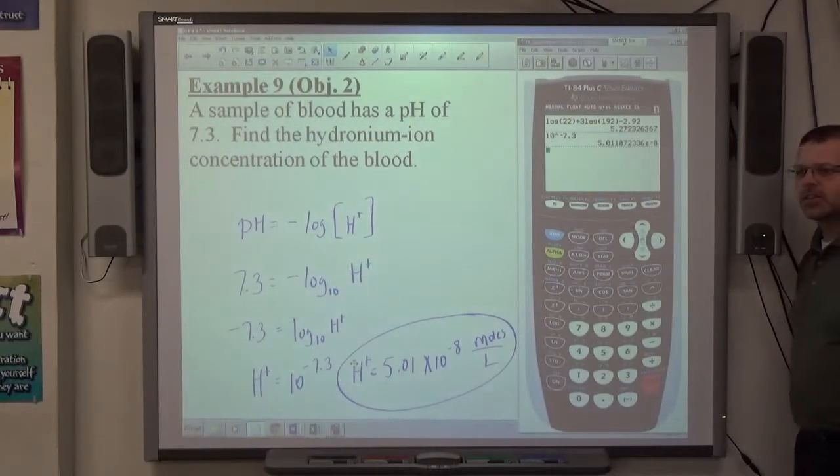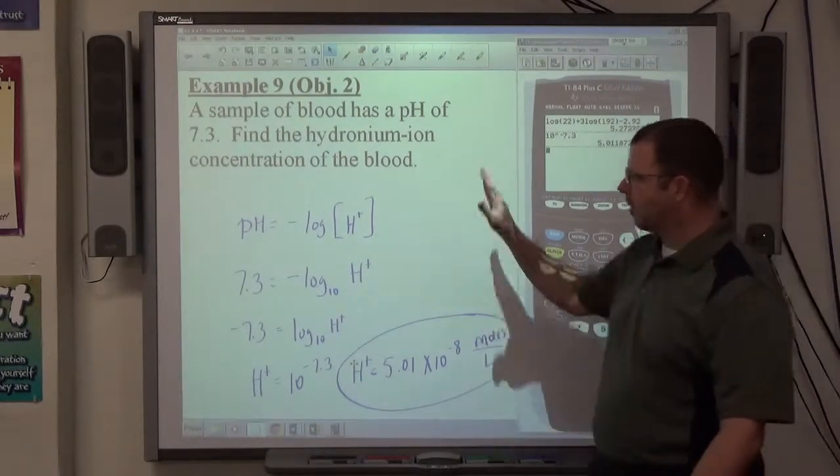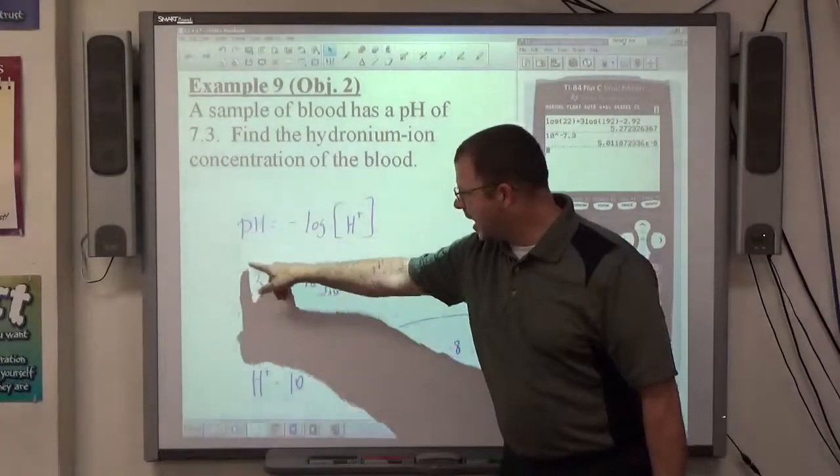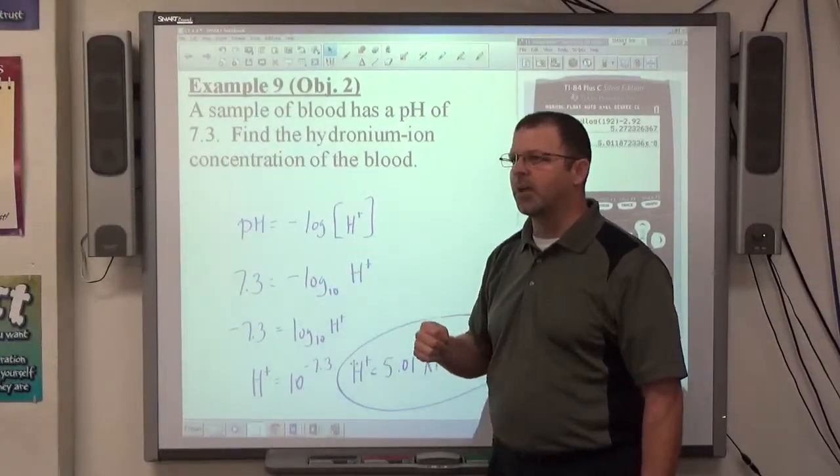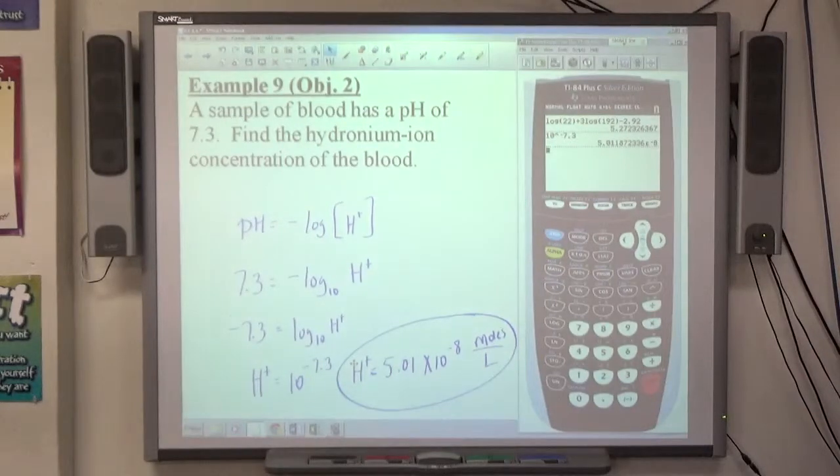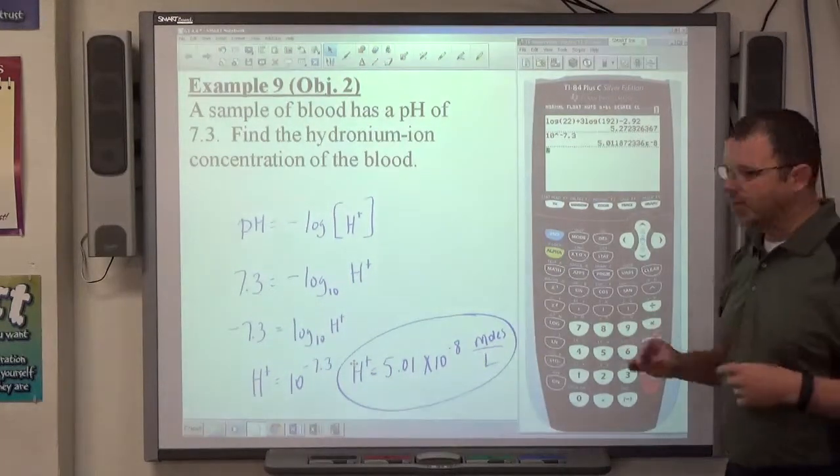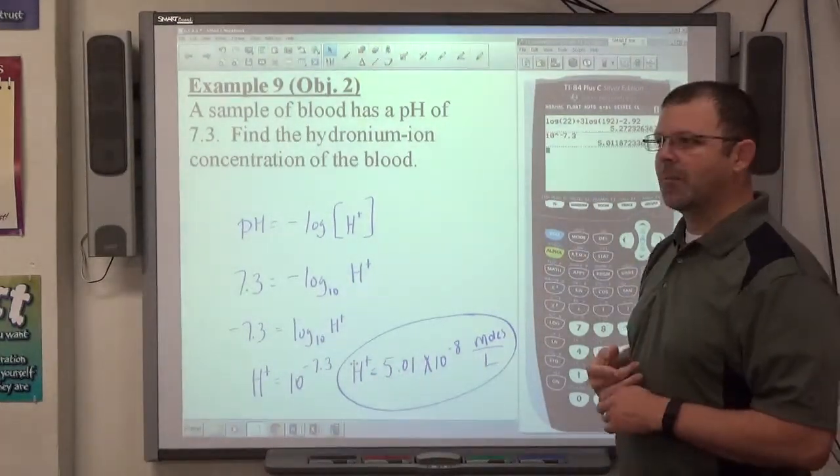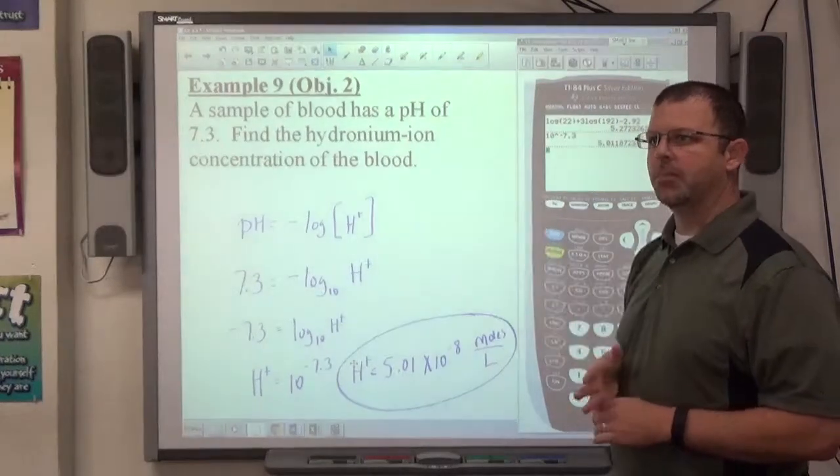So make sure you give me that correct unit on hydronium ion anytime you're asked for it. And that's basically all it is. So you have the logarithm formula, or I should say the pH formula here. They gave me pH, you've got to solve for H+. The other way they do it, which we'll see in the other examples, is they're going to give you H+, and ask for pH. In this case, 7.3, that makes it a base. So that blood is a base.